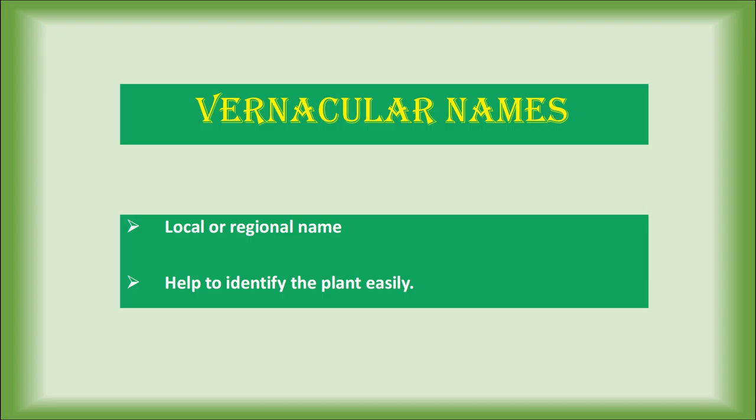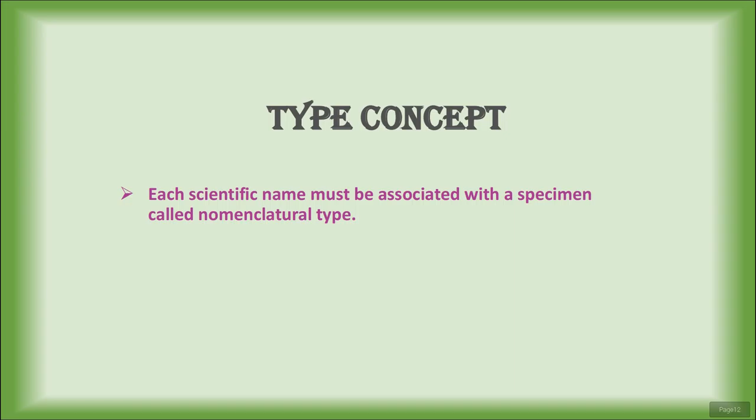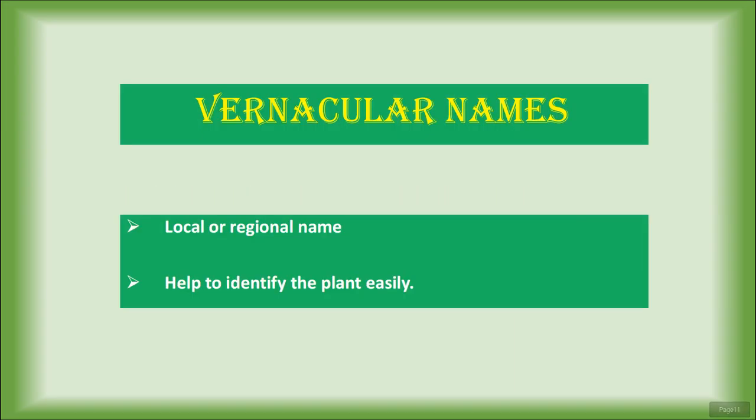Vernacular names, otherwise called common names, are local or regional names given to plants. They are often descriptive and help to identify the plant easily. Scientific names or botanical names of a species are always binomial, meaning they have two names: the first name is the genus and the second is the species. An example is Pisum sativum.